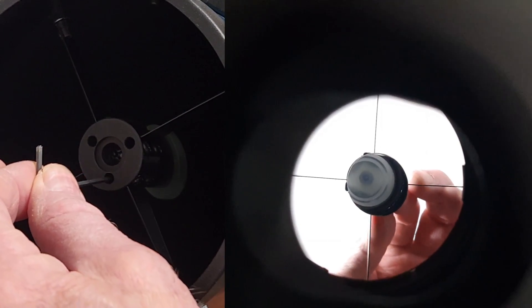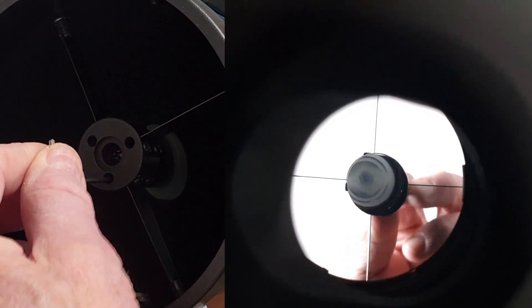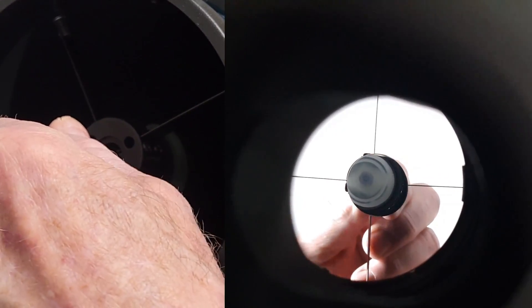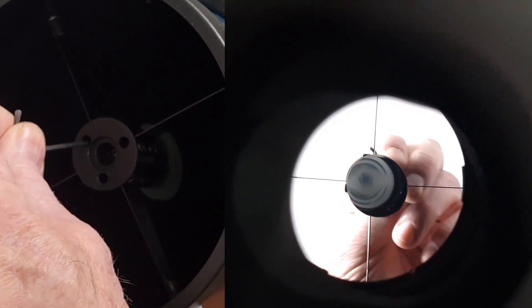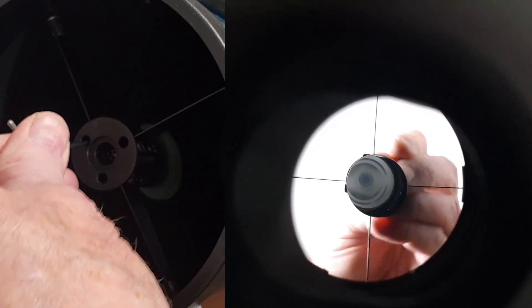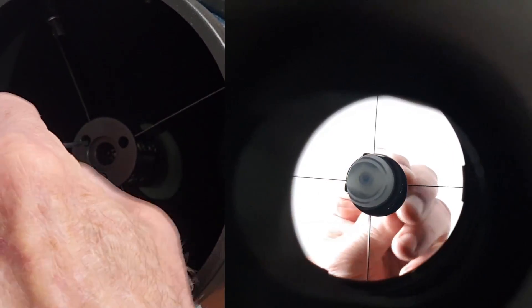I want to show you what it looks like when I tweak that back into adjustment. Okay, I'm now going to make some adjustments to these three Allen screws here. See if I can tweak this back into some sort of reasonable adjustment. Now, there's a lot of trial and error involved with this.